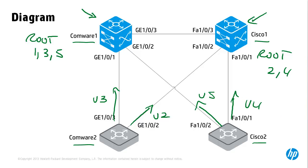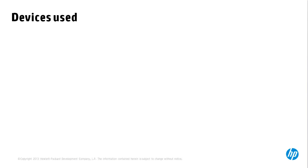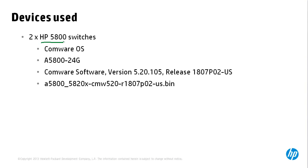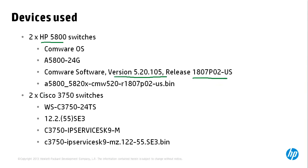Load sharing from the access layer to the core will be enabled by configuring both Comware 1 and Cisco 1 as the root switch for various VLANs. The specific devices used are two HP 5800 series switches running Comware OS version 520105, and two Cisco 3750 switches running 12.2(55)SE IP Services IOS. The specific binary files used by the Comware and Cisco devices are shown on screen.